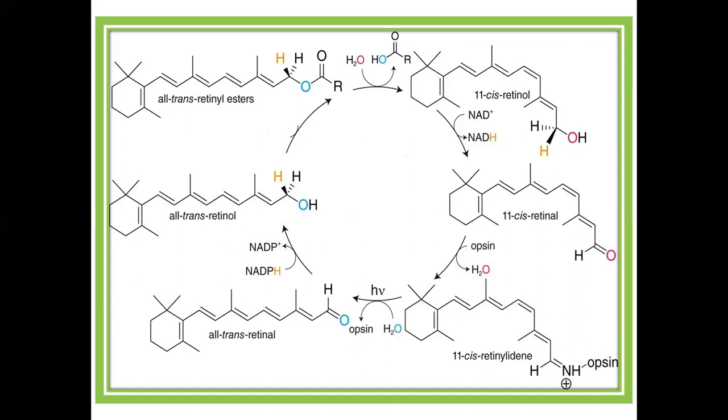When light strikes rhodopsin, it converts to lumi-rhodopsin, then converts to metarhodopsin I, and then metarhodopsin I converts to metarhodopsin II, which is called photo-excited rhodopsin molecule. After this photo-excitation, metarhodopsin splits into opsin and all-trans retinal. The protein separates and all-trans retinal is released.